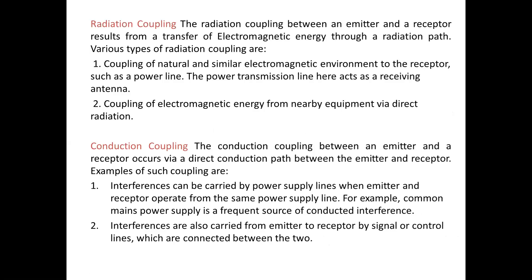Radiation coupling between an emitter and a receptor results from a transfer of electromagnetic energy via a radiation path. Various types include: coupling of the natural electromagnetic environment to the receptor (such as a power transmission line acting as a receiving antenna), and coupling of electromagnetic energy from nearby equipment via direct radiation.